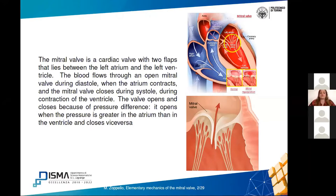The blood flows through an open mitral valve during a phase called diastole, and this phase happens when the atrium contracts and there is a pressure difference between the atrium and the ventricle — during the opening of the valve the pressure is higher in the atrium than in the ventricle. Instead the valve closes during the phase called systole, in which the ventricle contracts, and in this phase the pressure is higher in the ventricle than in the atrium.